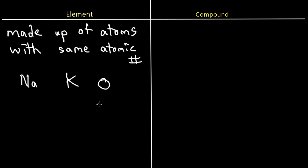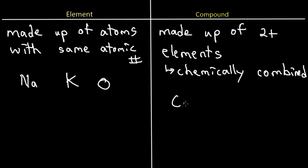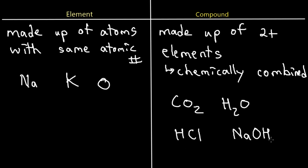Compounds are substances made up of two or more elements that are chemically combined. Examples of compounds include carbon dioxide, water, HCl (hydrochloric acid), and sodium hydroxide. As you can see, they all involve different elements combined together — carbon and oxygen in CO2, hydrogen and oxygen in water — and so on to form a compound.